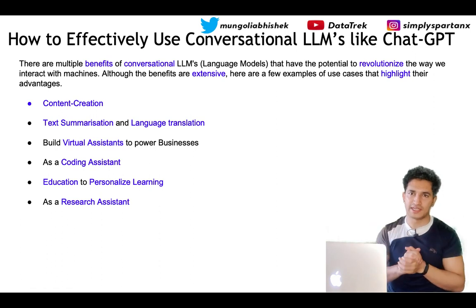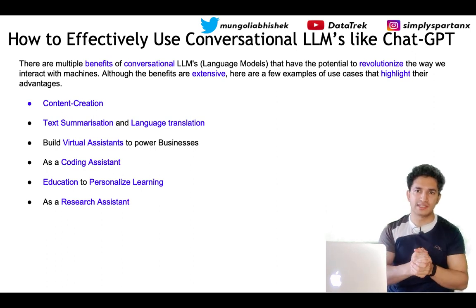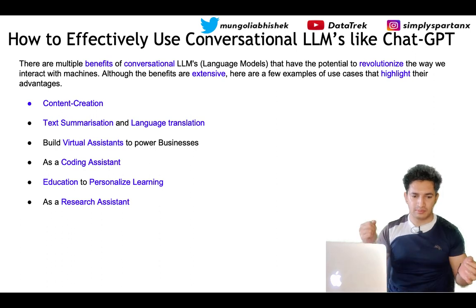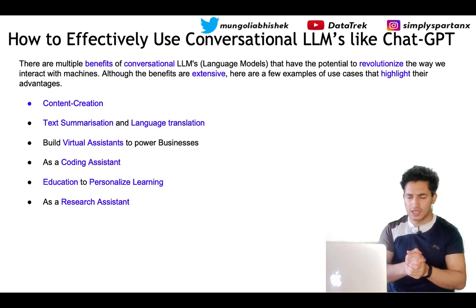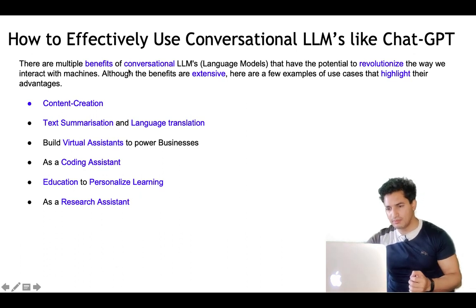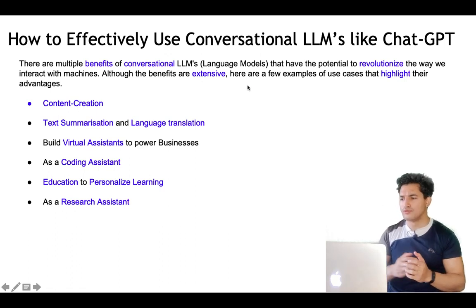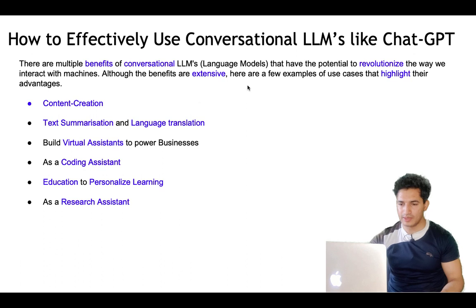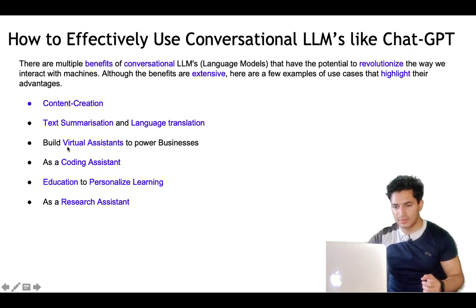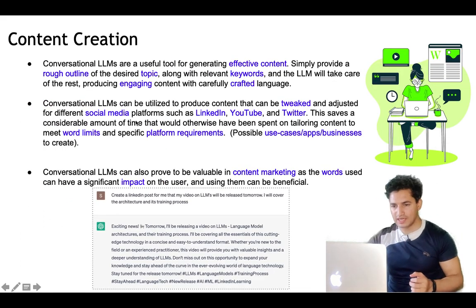So we've seen the open-source LLMs available and the bad and ugly of LLMs — factual errors, biases, hallucinations, and harmful information. On the other side, there are multiple benefits that LLMs offer. We will now look at some of them. There are multiple benefits of conversational LLMs that have the potential to revolutionize how we interact with machines. Key use cases include content creation, text summarization, language translation, virtual assistants, coding assistance, research assistance, and personalized education.